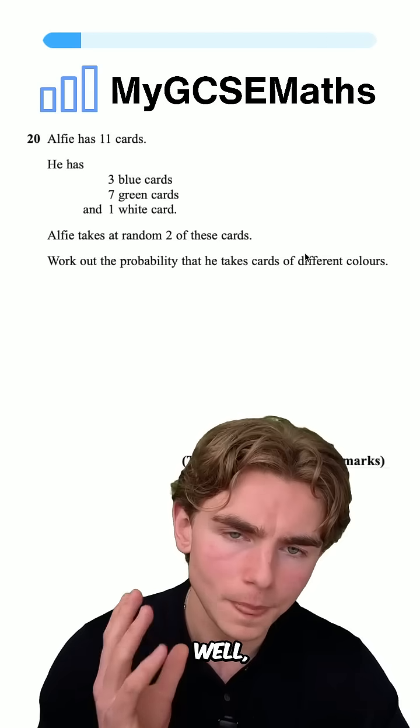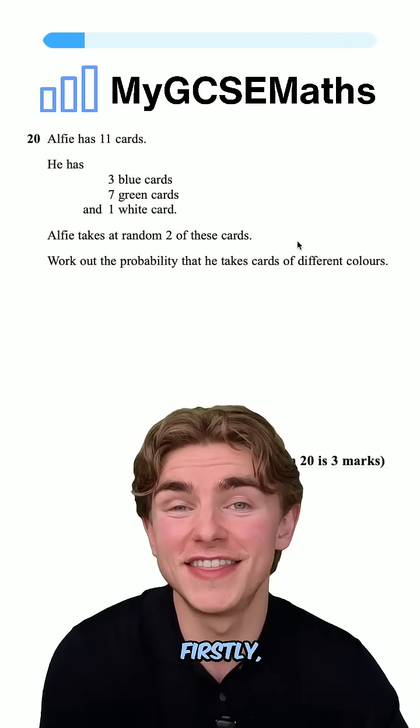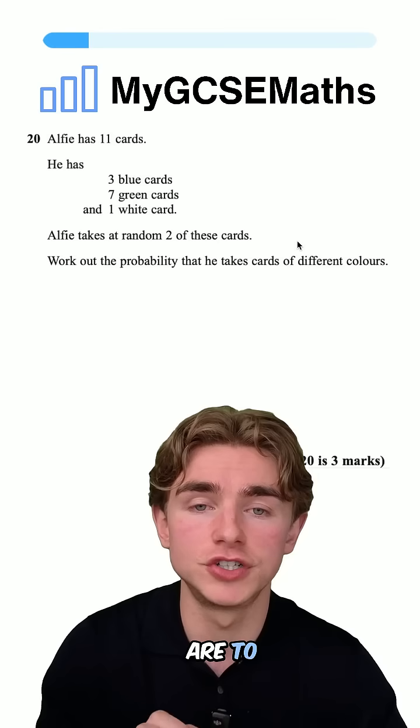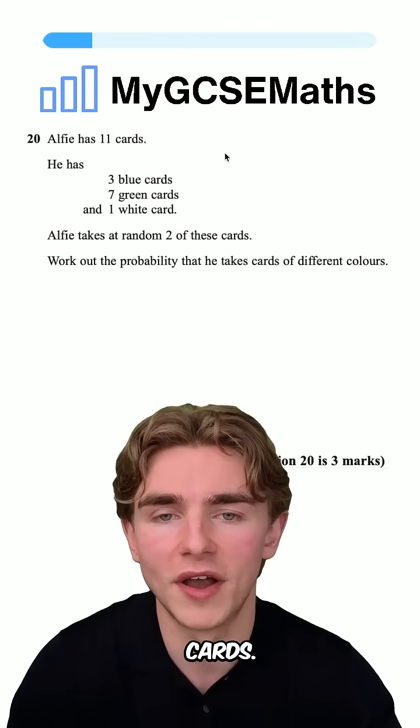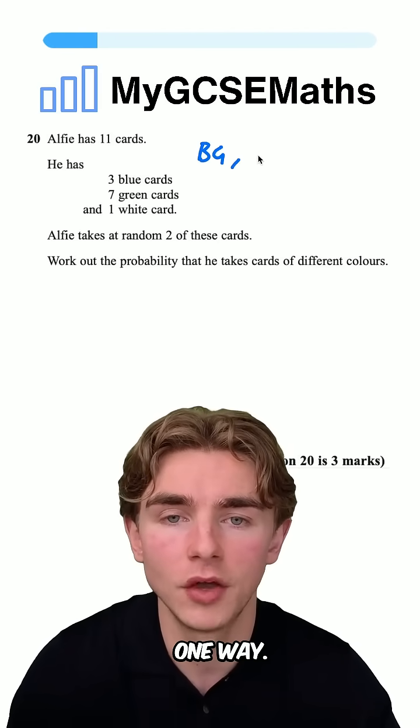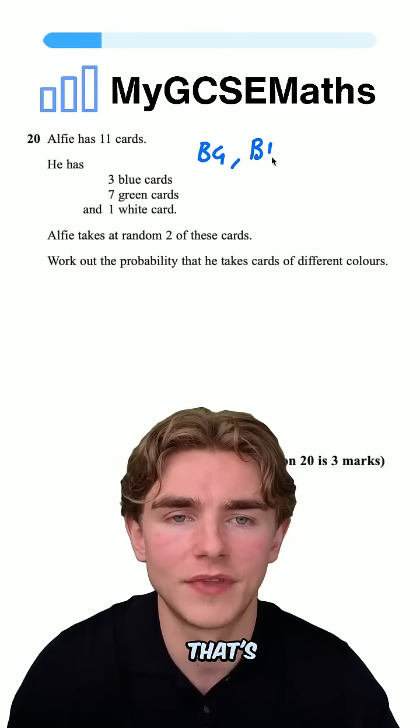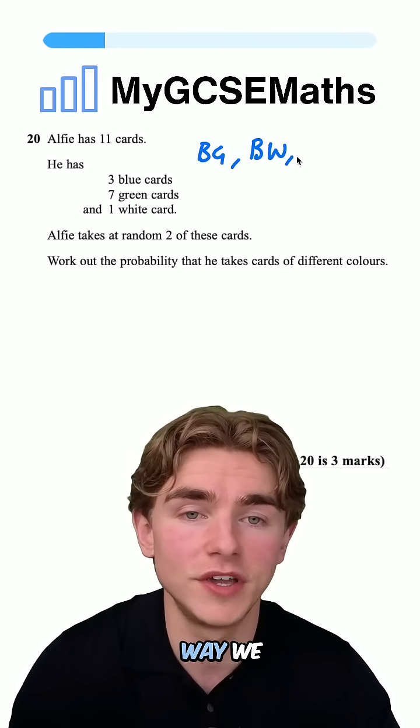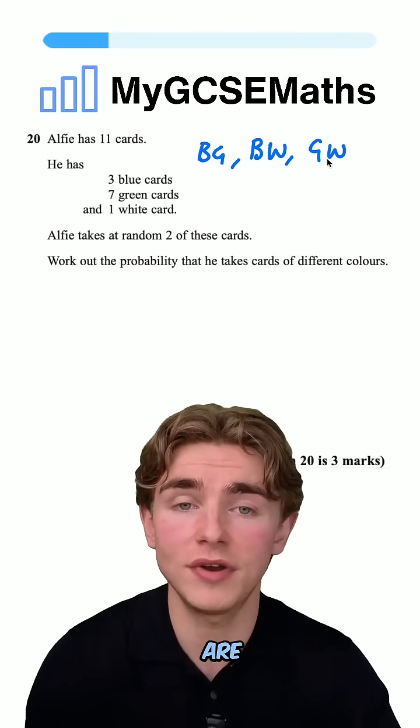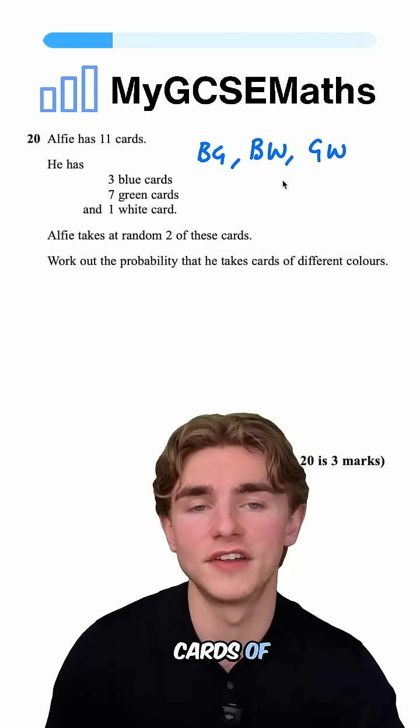How are we going to do it? We need to work out the different ways to choose two different cards. We could have blue-green, that's one way. Or blue and white, that's another way. Or the final way, green and white. So there are three different ways to choose two cards of different colors.